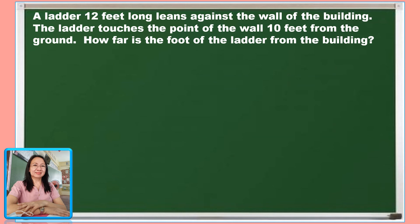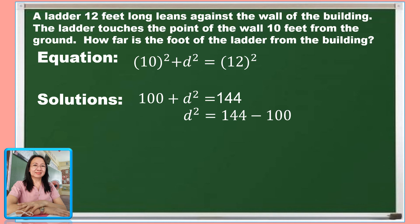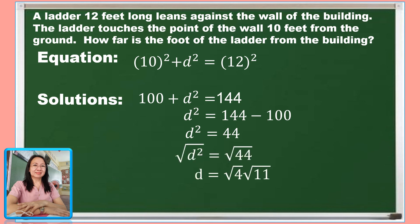Our equation is: 10 squared plus D squared equals 12 squared. Simplifying, the square of 10 is 100 and the square of 12 is 144. Adding both sides by negative 100, D squared equals 144 minus 100, which is 44. Taking the square root of both sides, we factor: square root of 44 equals square root of 4 times square root of 11, and the square root of 4 is 2. So D equals 2 square root of 11.